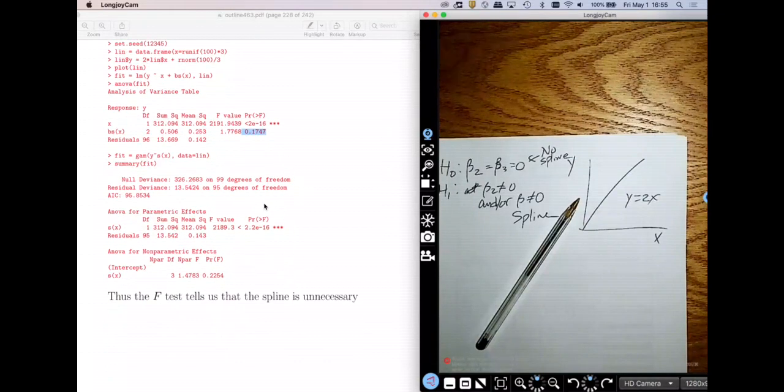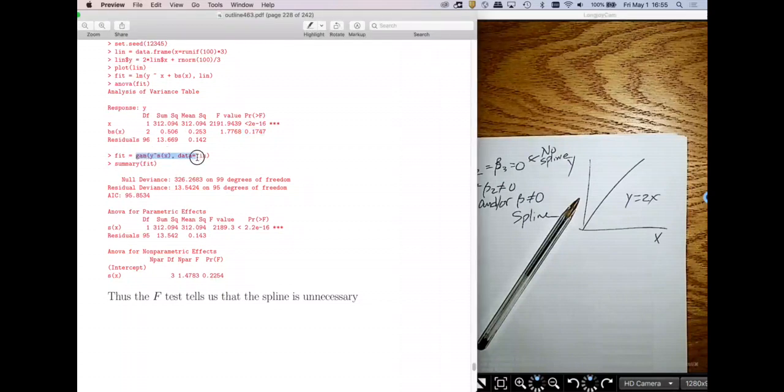All right. Now, let's go look at the test you would probably do in real life. In real life, you would use the GAM function and stick S around it. So S at X. And when you get a, when you do a summary on this, you end up with a couple parts of the output. So you get your null and residual deviances and AIC like you usually do. But then you get a test for the parametric effect.